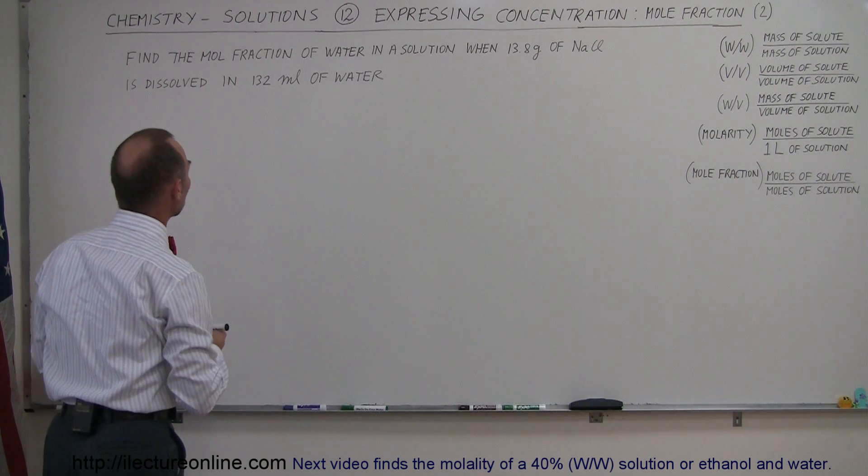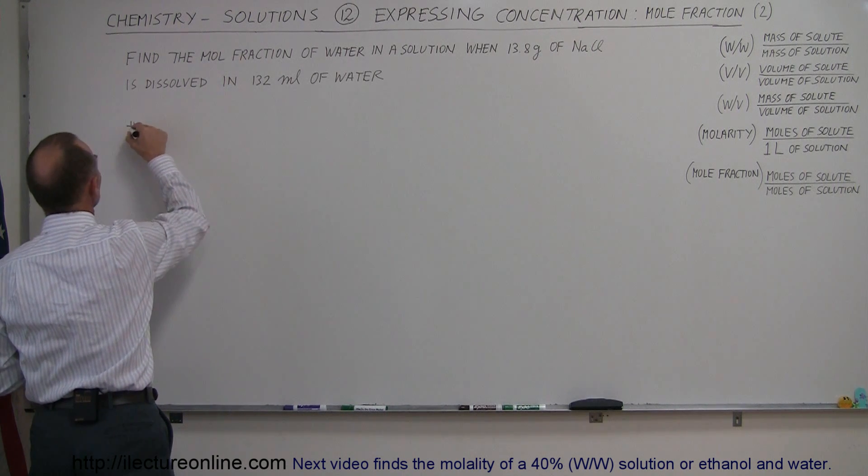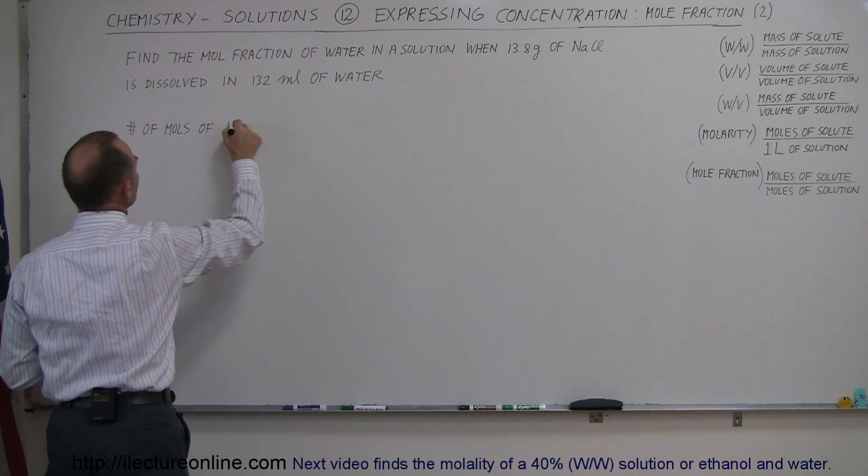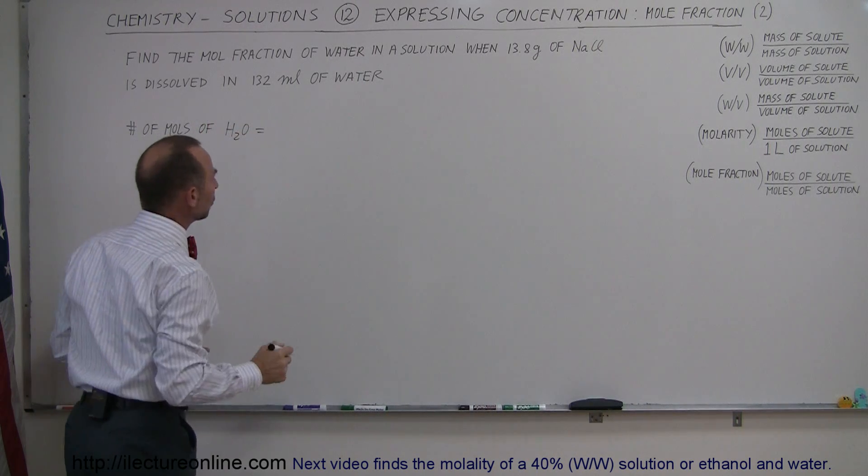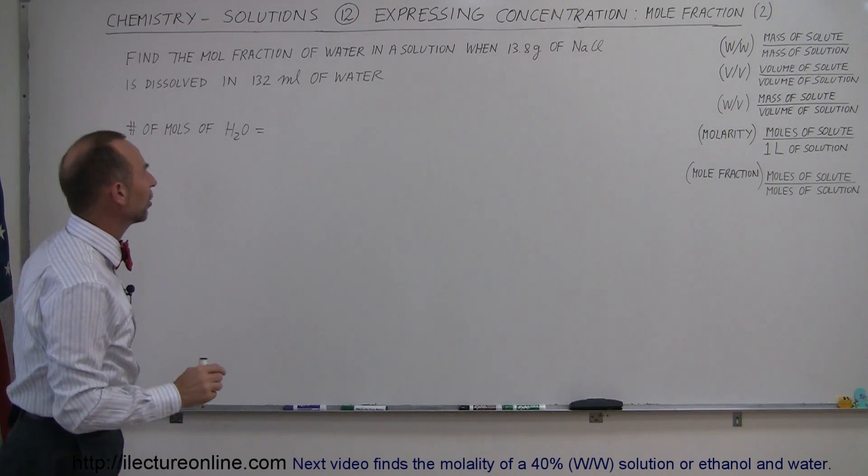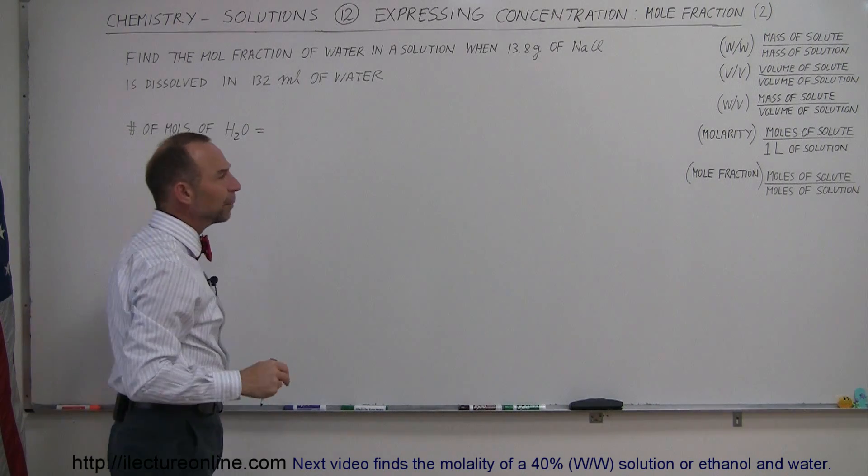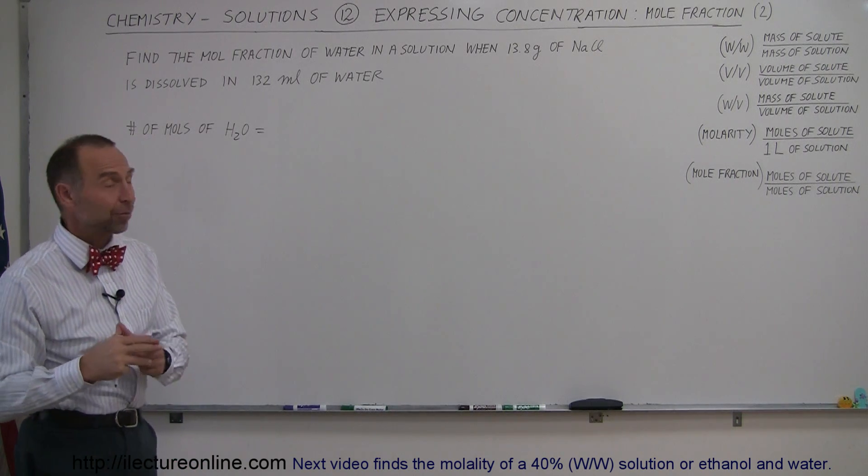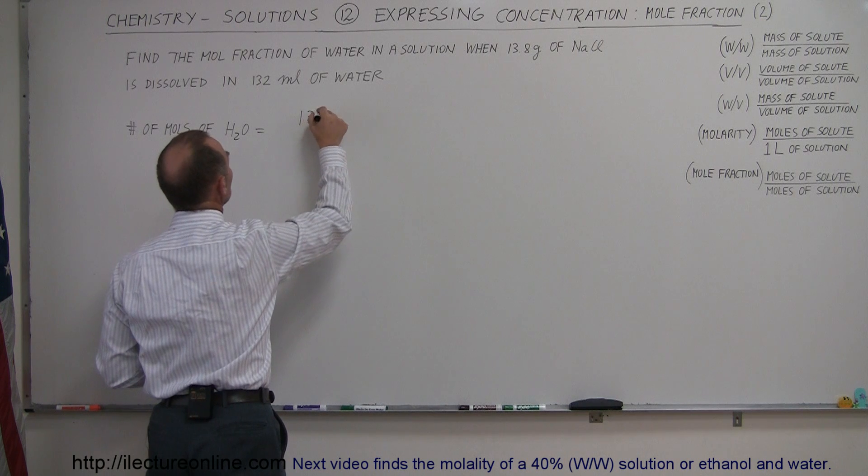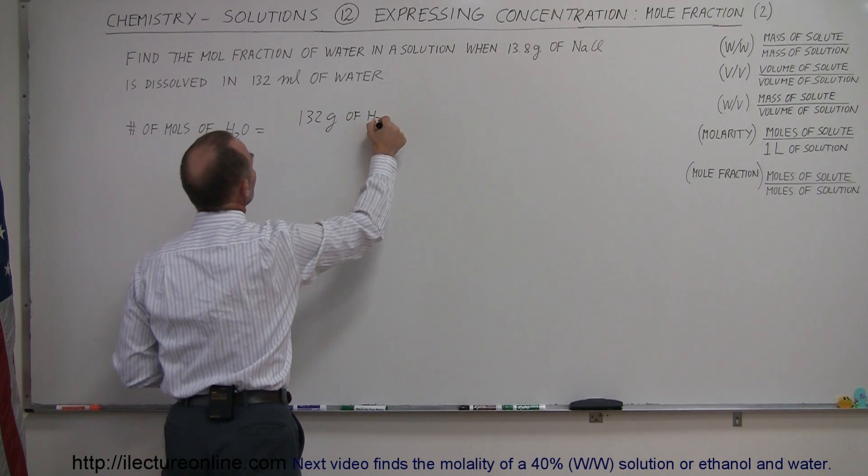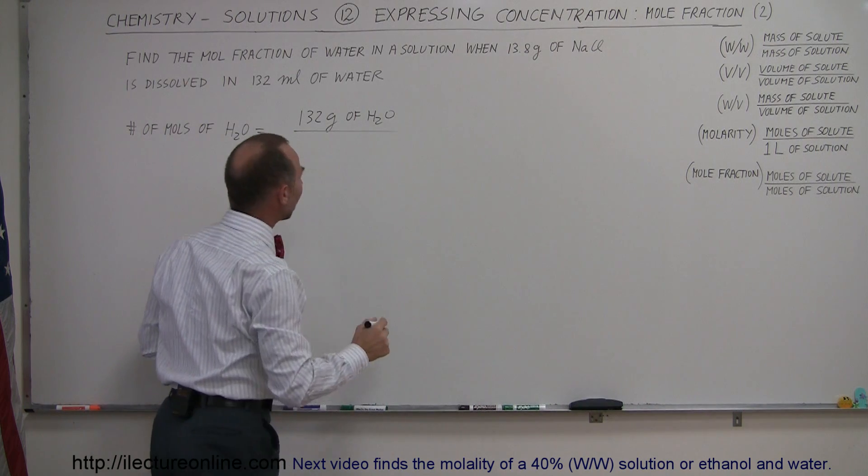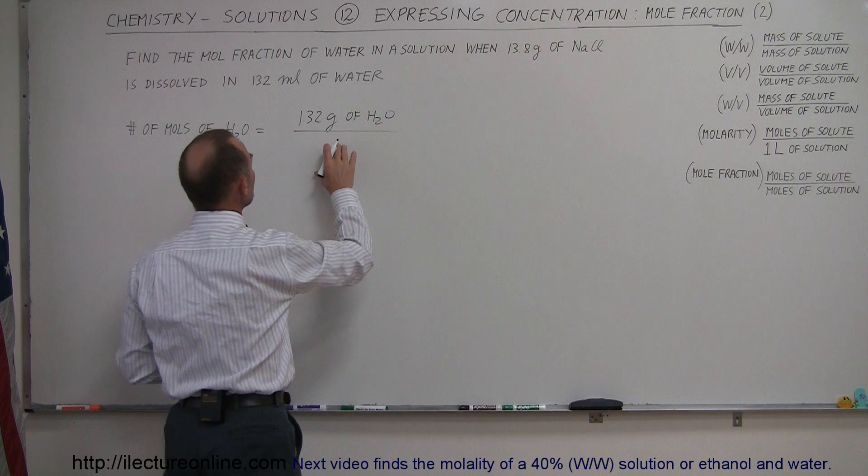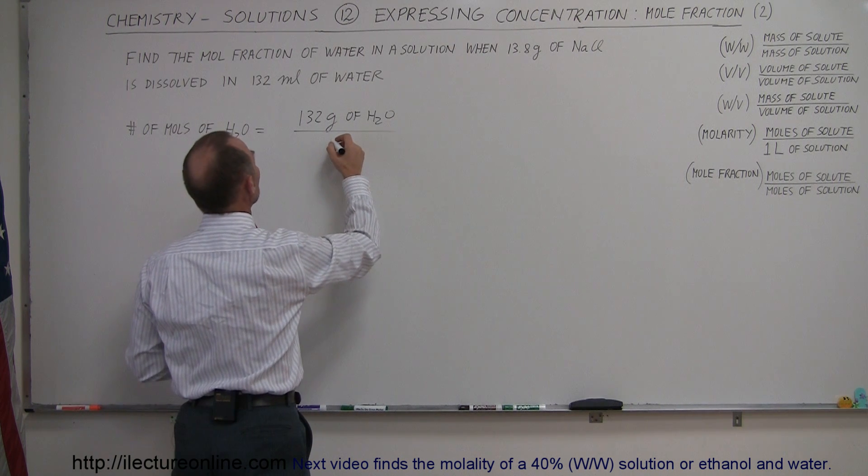So let's start with the number of moles of water. The number of moles of water is equal to... we need the mass of the water. They give us 132 milliliters and we can say that 132 milliliters of water is very close to 132 grams of water. So let's take that as 132 grams of H2O and we divide that by the molar mass, the number of grams per mole that will give us the number of moles of water.